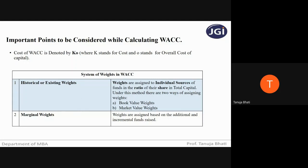Under book value weights, you take the value of each source of finance from the books of the company — from the balance sheet. Under market value weights, you assign weights based on the market value: what is the market price, multiplied by the number of shares to get the value. In the exam, it will be specifically mentioned whether you have to calculate using book value weights or market value weights.